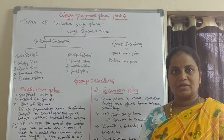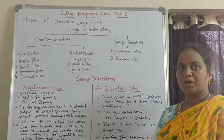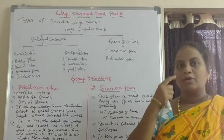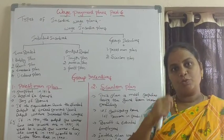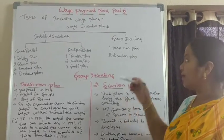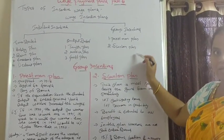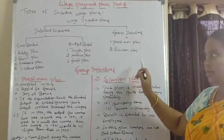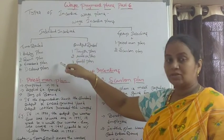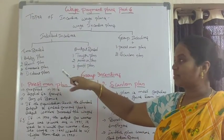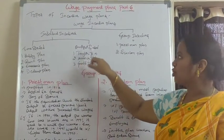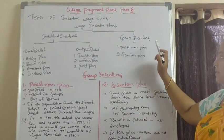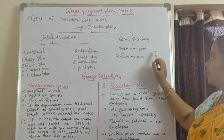Today our topic is Wage Payment Plans, Continuation Part 6: Group Incentive Plans. There are two types: the Pristman Plan and the Scallon Plan. We already discussed time-based and output-based plans in previous classes, and now we are going to discuss group incentives.